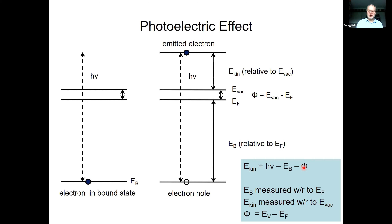The work function is relatively small compared to the other energies involved, because we are talking about X-ray energies — many hundreds of electron volts of photon energy. In XPS we are normally talking about core levels with typically several hundred electron volts of binding energy.